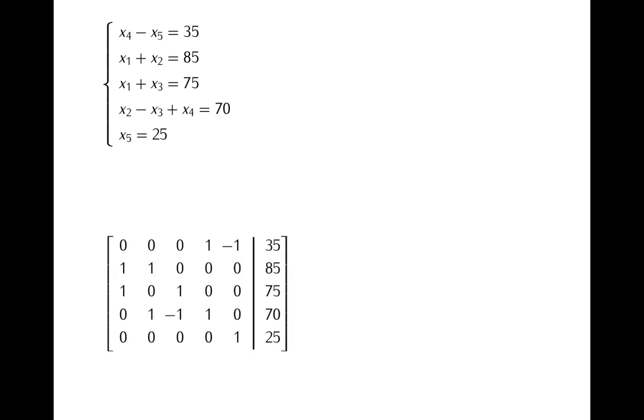By the way one thing that you can notice about this matrix is that most of its entries are zeros. A matrix like this consisting mainly of zeros is called a sparse matrix. Such sparse matrices appear very frequently in many practical applications.